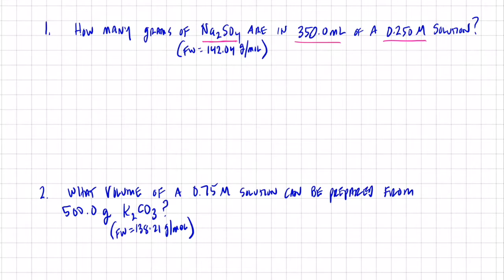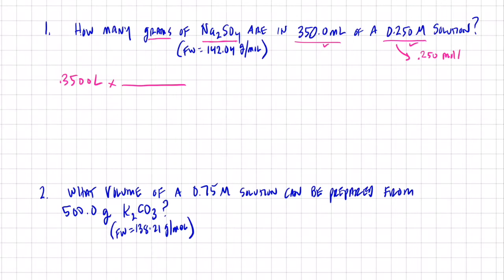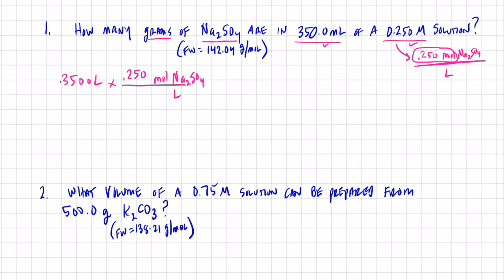I have 350 mL and the molarity is 0.250 molar, and I want to figure out the grams of sodium sulfate. I know molarity and I know volume, so we start with our volume in liters: 0.350 liters. We multiply by molarity as a conversion factor — 0.250 molar means 0.250 moles of Na₂SO₄ per liter. So liters divide out and I'm in moles of sodium sulfate.